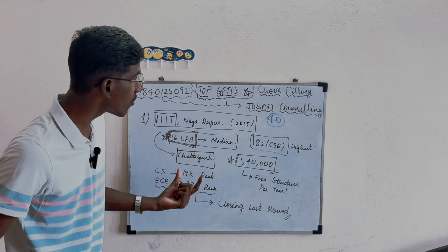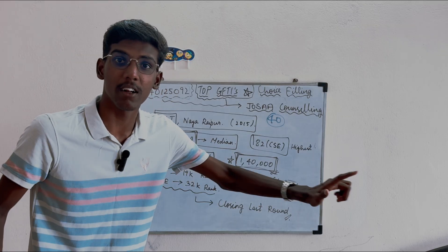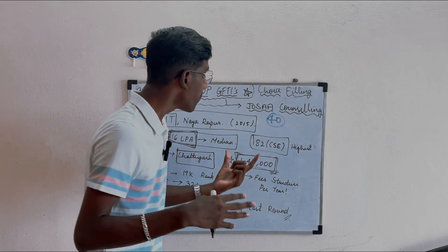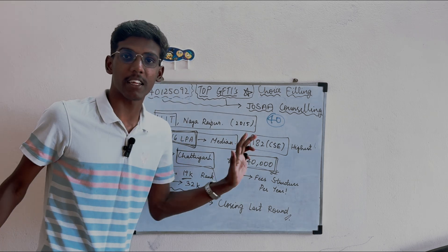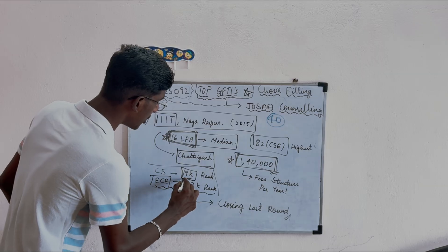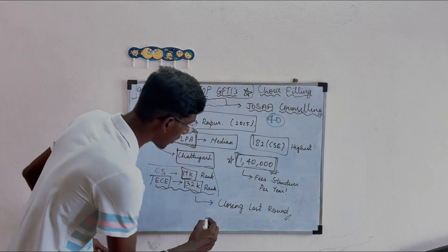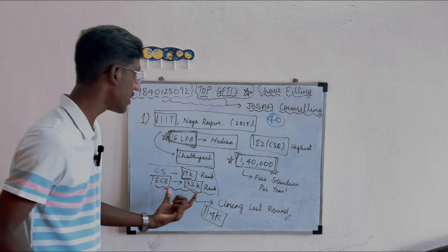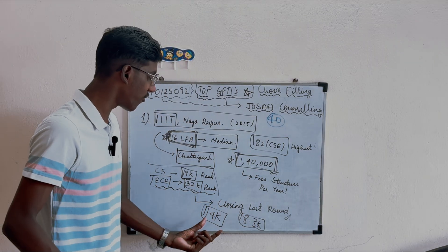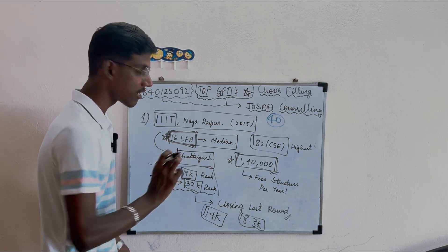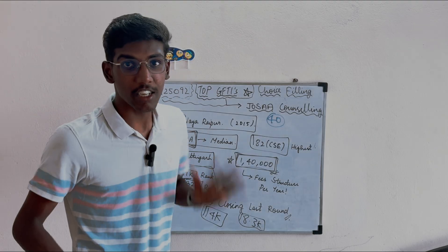Fee structure per year - academic fees are 1 lakh 40,000 to 1 lakh 50,000. Closing rank: CS is 19k open category, ECE is 32k. For OBC ranking, CS is 8.3k and ECE is 14k. This is the top GFTI - IIIT Nagaraipur.